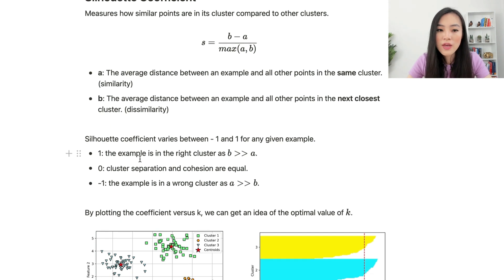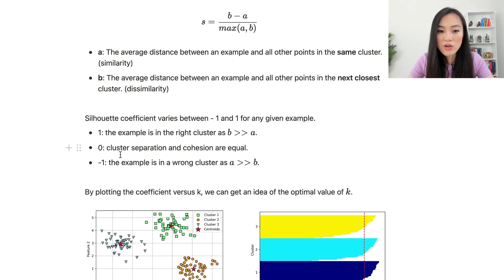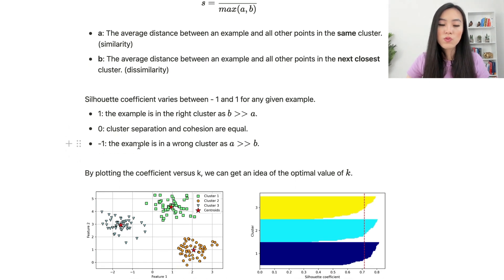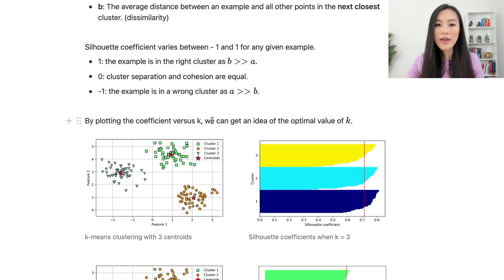The silhouette coefficient varies between negative 1 and 1 for any given example. If the coefficient is 1, it means the example is in the right cluster because the dissimilarity between clusters is much larger than the similarity within clusters, which is what we want. If the coefficient is 0, it means cluster separation and cohesion are equal, which is not what we want. The worst scenario is when the coefficient is negative 1. It indicates the example is in a wrong cluster because the similarity is much larger than the dissimilarity. It means the similarity within clusters is much larger than the dissimilarity between clusters, so one example is more similar to other examples in other clusters than examples in its own cluster.